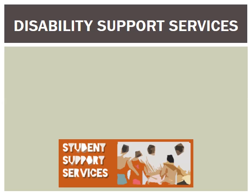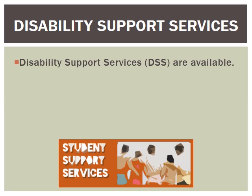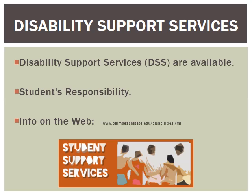Disability Support Services is in the Burt Reynolds building, same building as the bookstore and Dunkin' Donuts. The main thing you need to know is that unlike high school, you need to self-identify any support services you need — whether it's hearing, vision, or any other issue. You can't expect the teacher to just know. Even if you think your need is obvious to you, it may not be obvious to others. Go down to Disability Support Services and let them know — they're lovely people and they will take care of whatever you need.